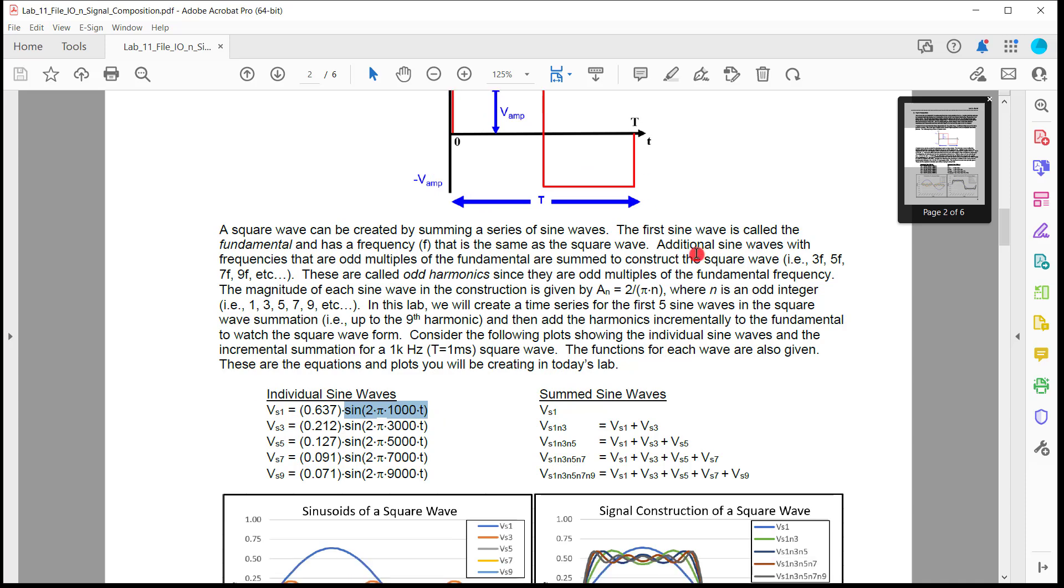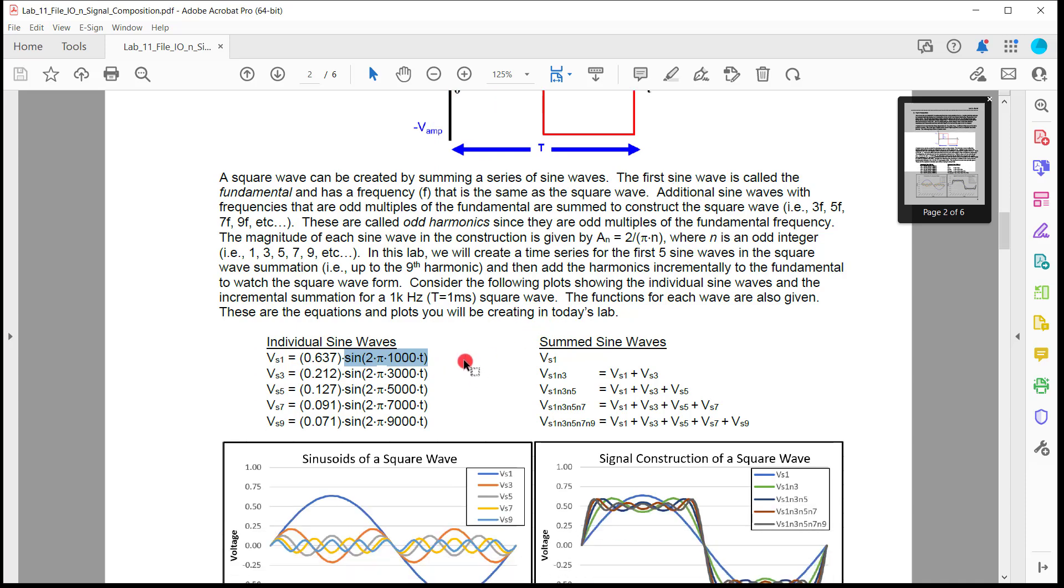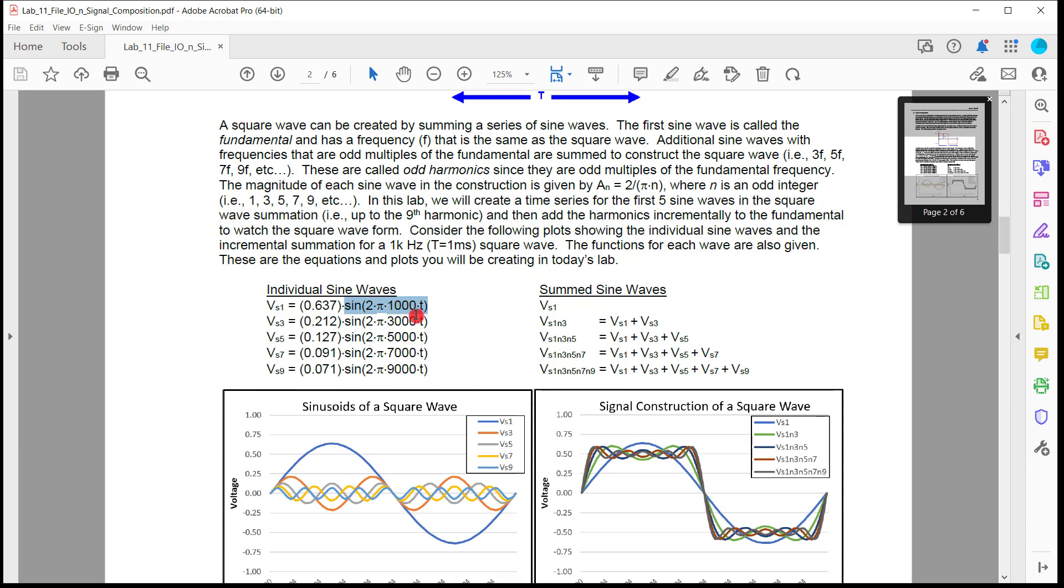If I wanted to create a fundamental sine wave, I would basically put sine 2 pi 1,000 T. So that would create a sine wave that sits right in between here. Then if you created odd harmonics, what that would look like is you would then have another sine wave, which is 3,000 hertz, and then another that's 5,000 hertz, and then another that's 7,000 hertz, another that's 9,000 hertz. And if you apply a scaling factor in the voltage dimension of 2 over pi times n, where n is the harmonic, meaning that this is harmonic 1, 3, 5, 7, 9, then you get this magnitude on here.